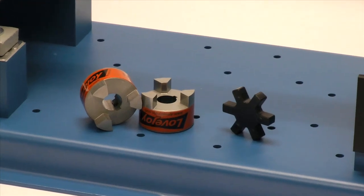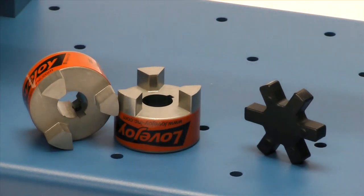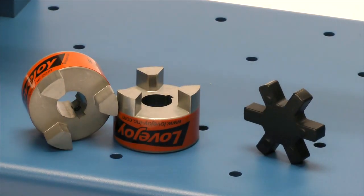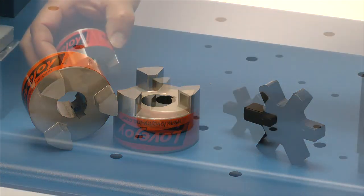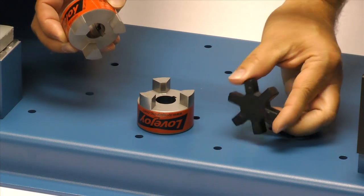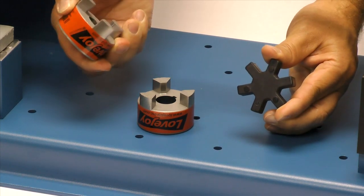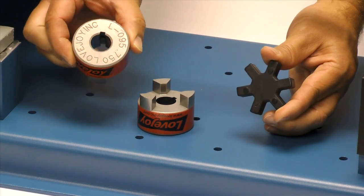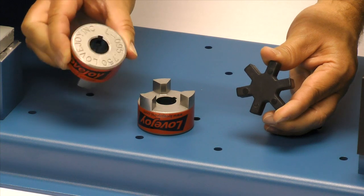The following components are provided with the purchase of your Lovejoy jaw-style coupling. You should have two jaw-style hubs and a spider. Always inspect the components to ensure you receive the proper parts and review the application details to ensure that this is the proper coupling to accommodate your application requirements.